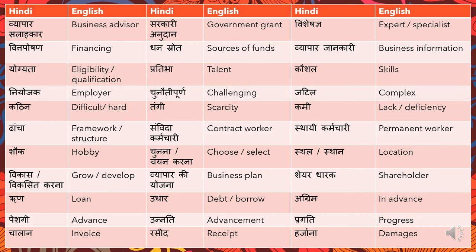'Chunauti poorn' means 'challenging.' For example, if the dialogue says 'these tasks are very challenging for a tax expert,' that would be 'yeh karya kar visheshagya ke liye bahut chunauti poorn hai.' 'Jatil' means 'complex.' 'Kathin' can be translated as 'difficult' or 'hard.'